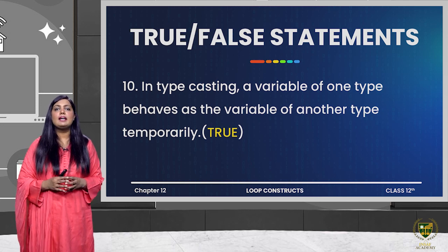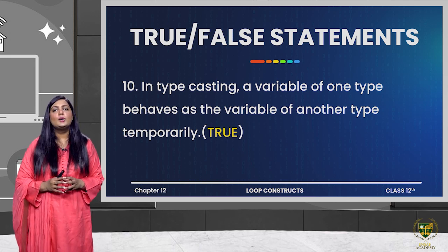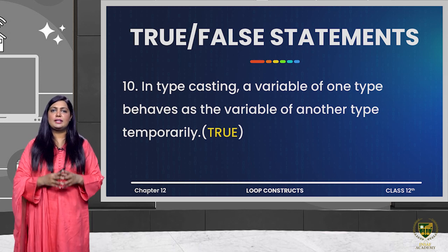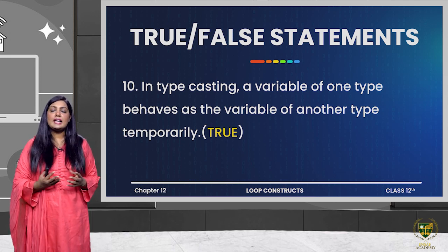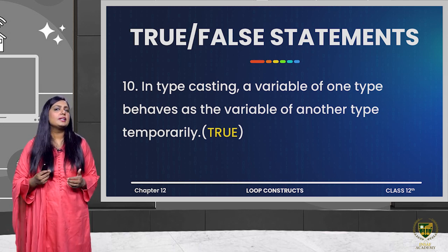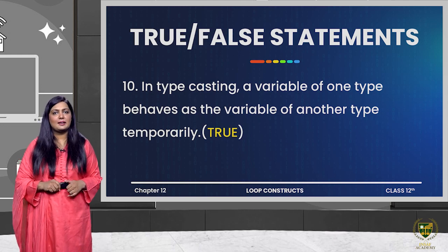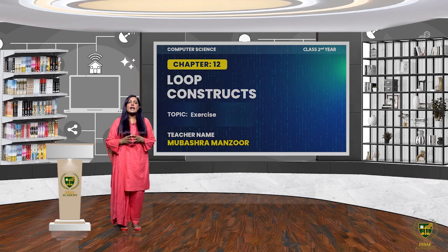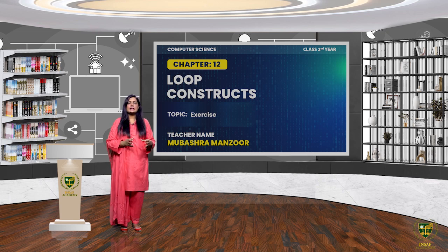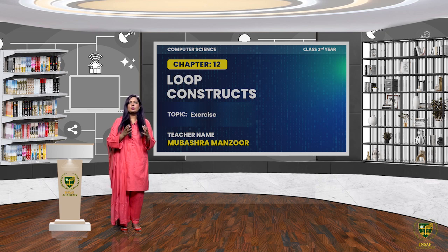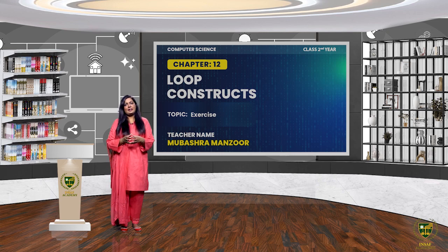Now let's move to question number 5 where you have a program and have to show the output — we'll go to the board and do a dry run. I hope students you will understand today's lecture. We have discussed every answer in detail. I hope you will be clear about why each answer is what it is. Until next lecture, Allah Hafiz.